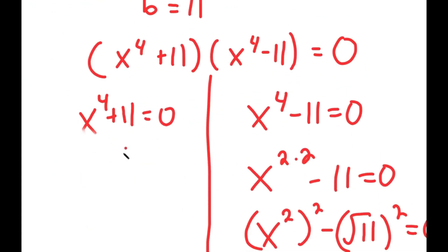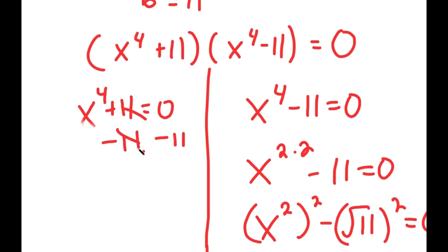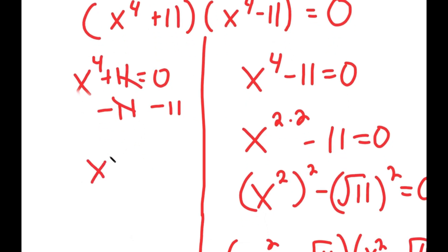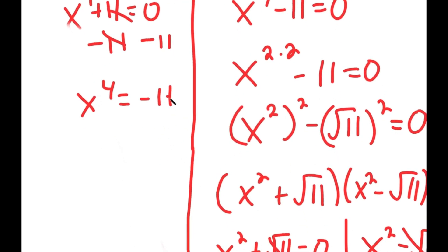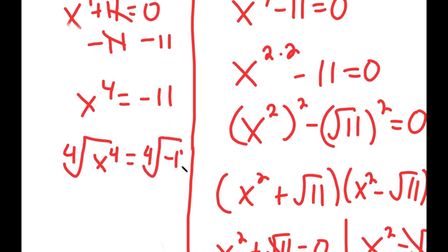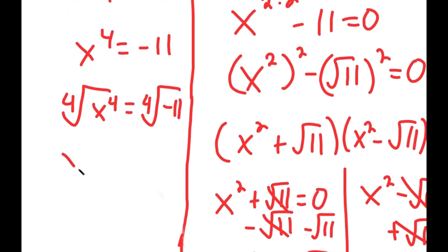Going back to x to the power of 4 plus 11 equals 0: subtracting 11 on both sides gives x to the power of 4 equals negative 11. Taking the fourth root on both sides, I get x equals positive or negative the fourth root of negative 11.